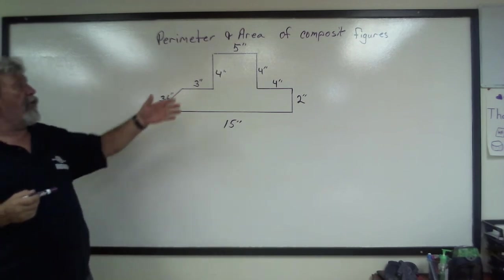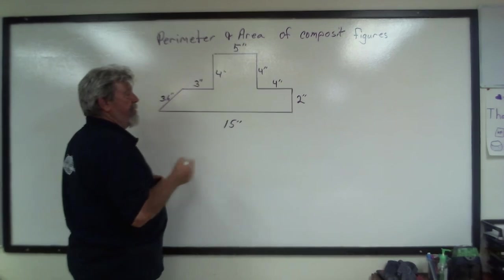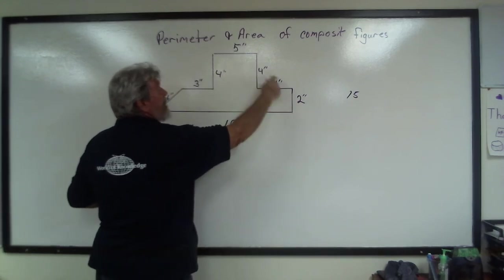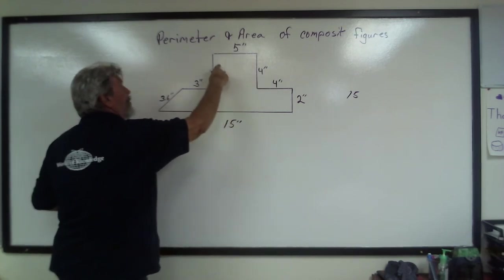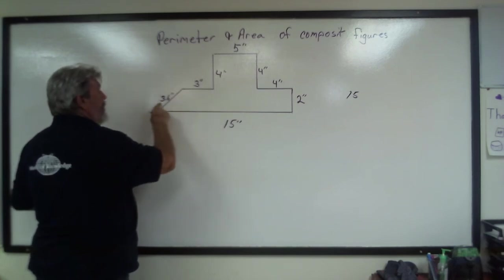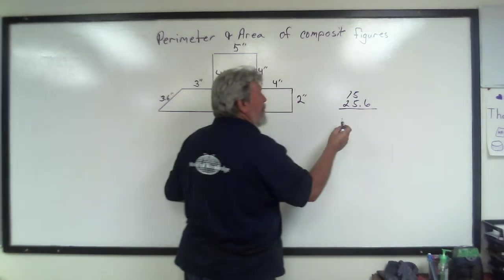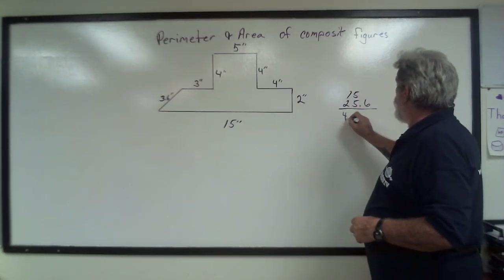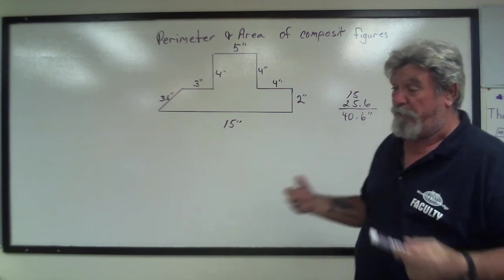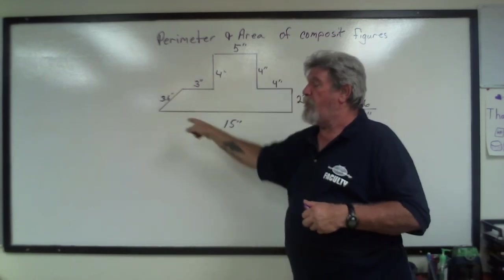Now, as we know, the perimeter is the distance all the way around. So all we need to do is add all of these together. So we're going to start here with the 15. Okay, so we have 15, then we've got 2 inches, 4 inches, 4 inches. That's 10 inches, plus 5 is 15, plus 4 is 19, plus 3 is 22, plus 3.6 is 25.6. So we'll just add that to the 15. And when we add them together, we end up with 40.6 inches. It's not square inches, it's just inches because it's only a singular unit, the distance around.